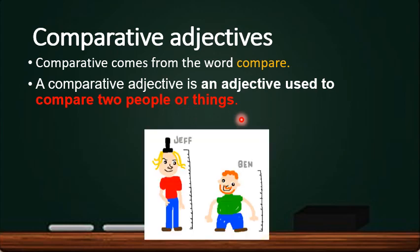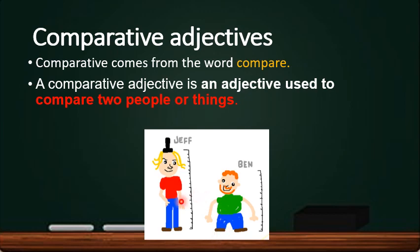For example, look at this picture. This is Jeff and this is Ben. Look at the height — both of them have different heights. When we want to compare the height of Jeff and Ben, you have to use a comparative adjective.